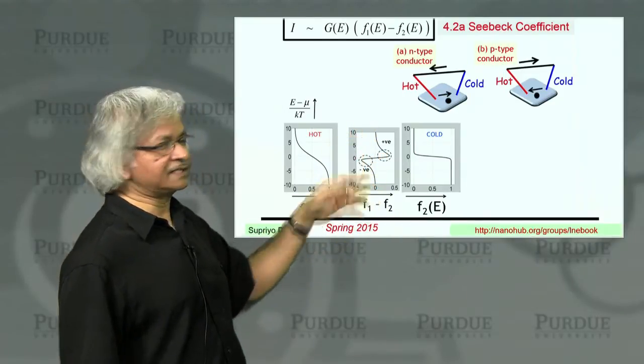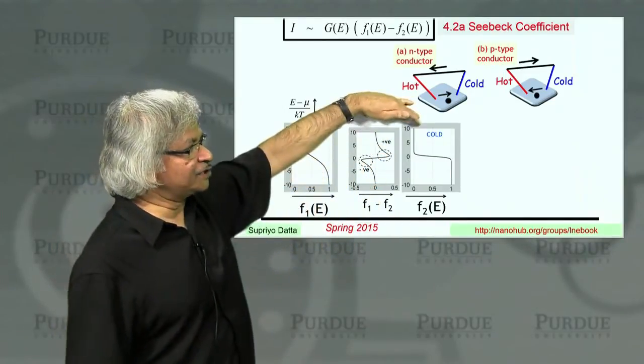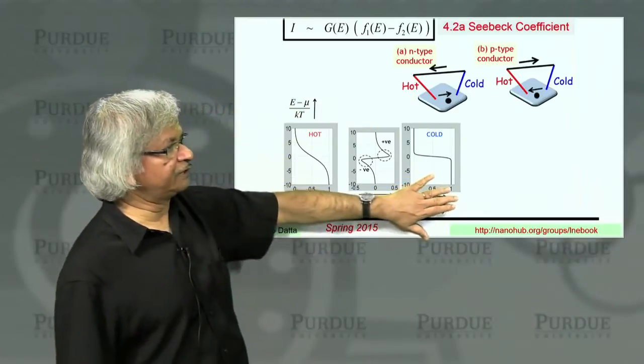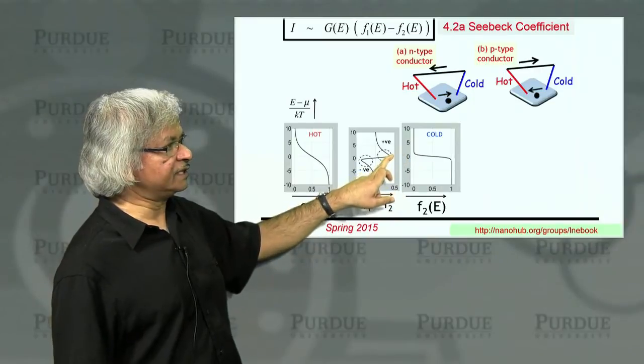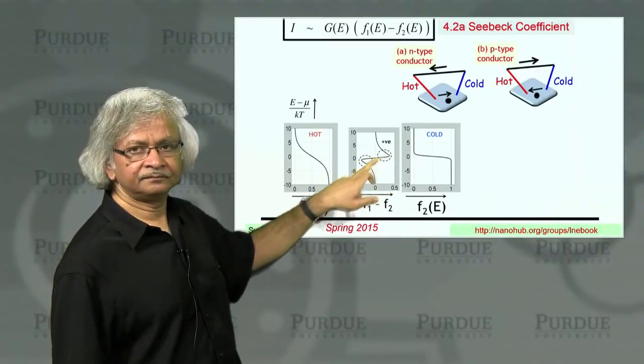Eventually, of course, they all go to 0 in the sense that at high enough energies, both are 0. At low enough energies, both are 1. But right around there, around the Fermi energy, you see this change in sign.